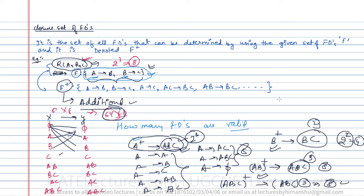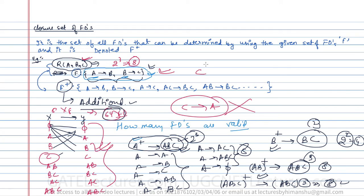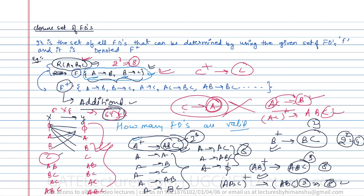Out of those 64 functional dependencies, we must find which are valid and which are not. For example, C→A is not valid because C+ = {C} only — we cannot derive A from C. On the other hand, AC→B is valid because A+ = {A,B,C}, which includes B, so even adding C doesn't change the result. This process of finding which functional dependencies are valid from the given set is called finding the closure set of functional dependencies, F+.